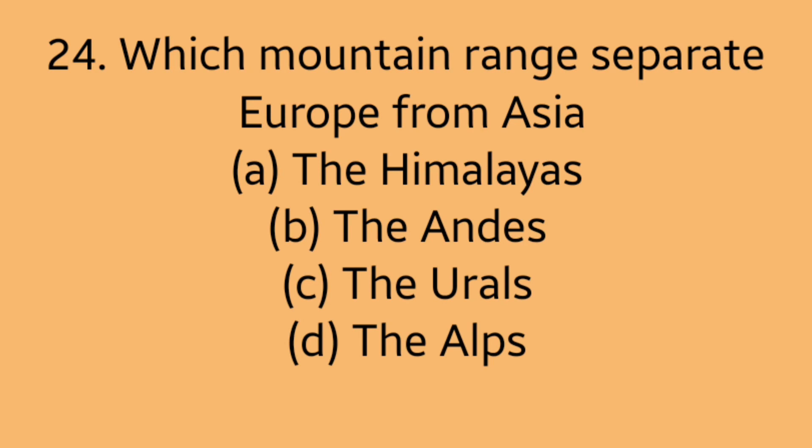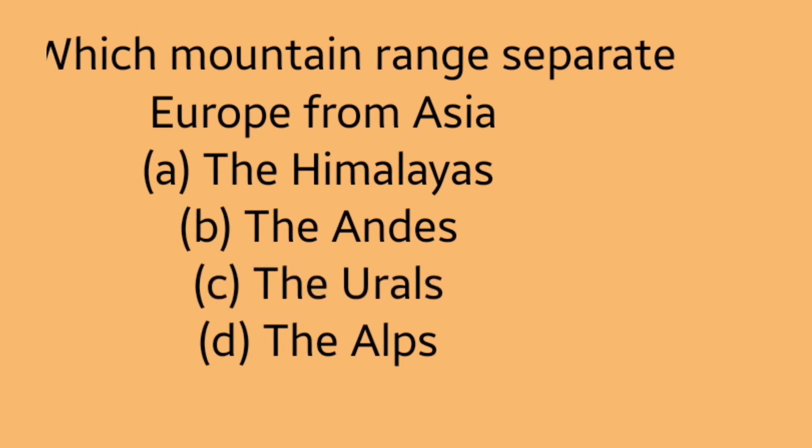Question 24: Which mountain range separates Europe from Asia? Option A: the Himalayas. Option B: the Andes. Option C: the Urals. Option D: the Alps. Answer is Option C, the Urals.